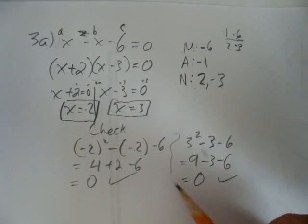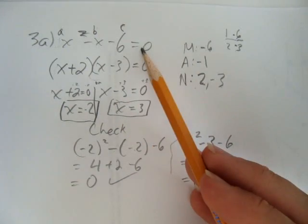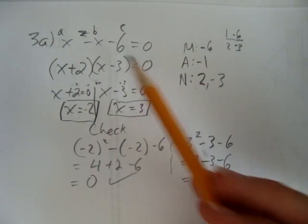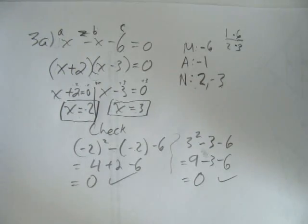So I know I'm right, that is, I found the answers, negative 2 and 3, that make this quadratic equation 0. I'm done.